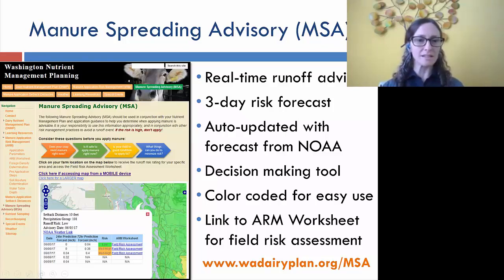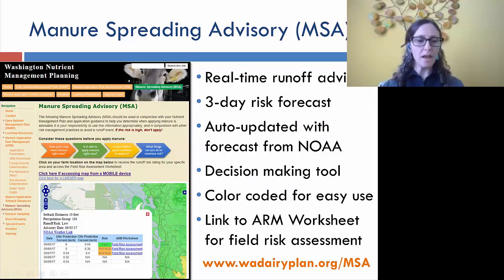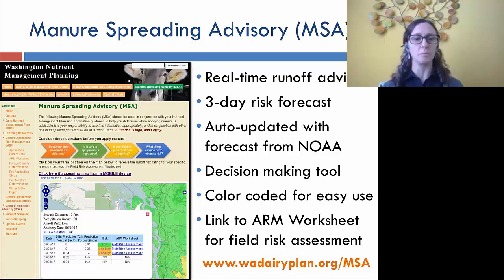When someone accesses the map, they zoom in, click their location, and get a pop-up with extra information: seasonal setback distances, the current runoff advisory for three days, precipitation forecast in 24-hour and 72-hour blocks, and a link to the field risk assessment worksheet. This pop-up also fulfills record-keeping requirements that landowners and producers are required to follow, so it provides a one-stop resource for everything they need.